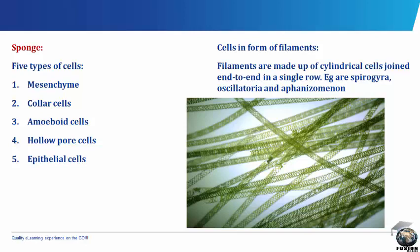Cells in the form of filaments. Filaments are made up of cylindrical cells joined end-to-end in a single row. Examples are Spirogyra, Oscillatoria and Aphanizomenon.